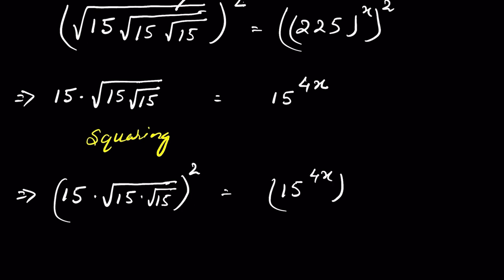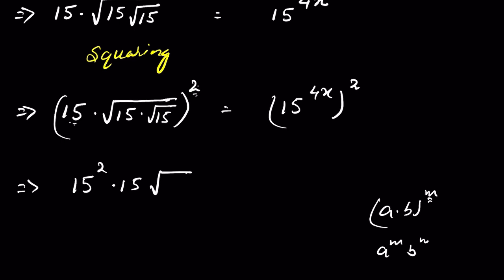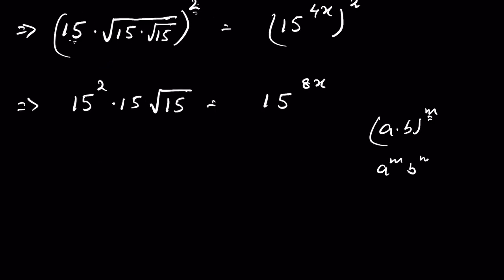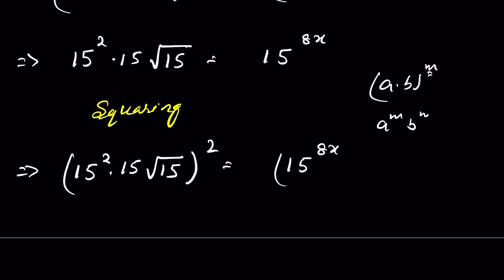Let's again square both sides: 15 times 15 under square root times 15 under square root under square root, whole squared, equals 15 raised to the power of 4x, whole raised to the power of 2. Now this gives 15 raised to the power of 2, because when a times b whole raised to the power m, the power is applied to a and to b also. Therefore this power 2 applies to 15 and to the square root, removing it. So it becomes 15 times square root of 15, equal to 15 raised to the power of 8x.